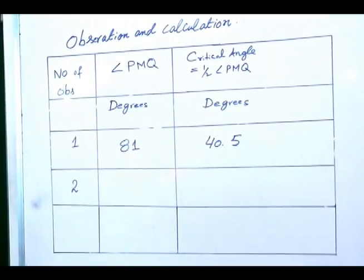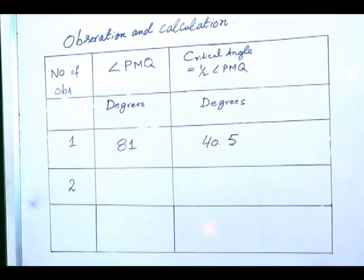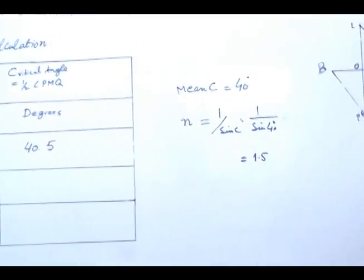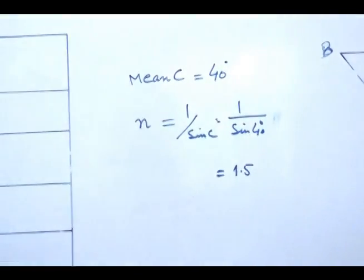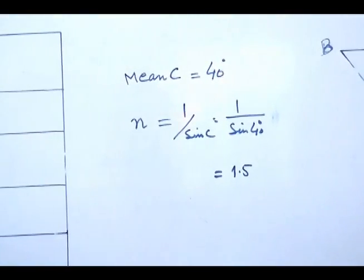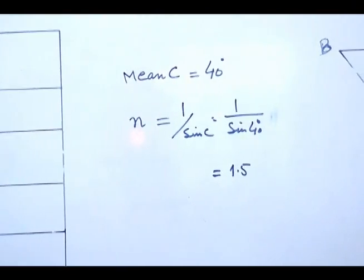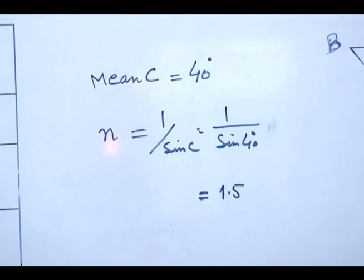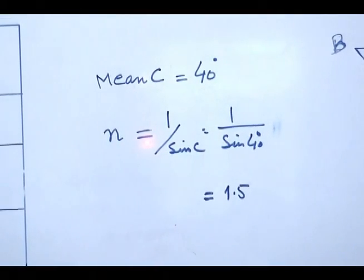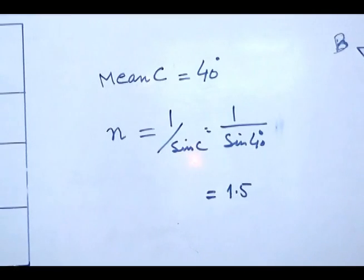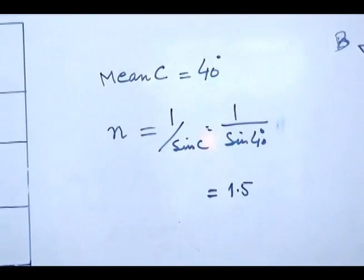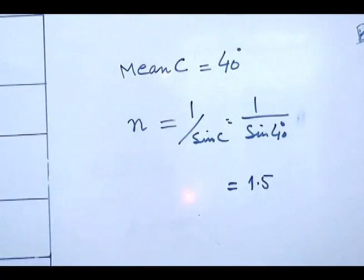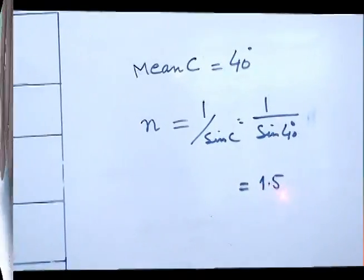Now take two more similar readings, and taking their mean, the angle comes out to be 40 degrees. Since we want to find the refractive index of the material of the prism, the formula is: N (refractive index) equals 1 over sine of the critical angle, which is 1 over sine of 40 degrees, and we get the refractive index of glass equal to 1.5.